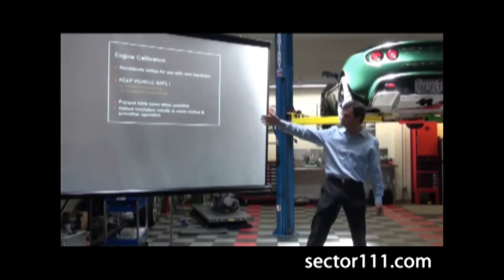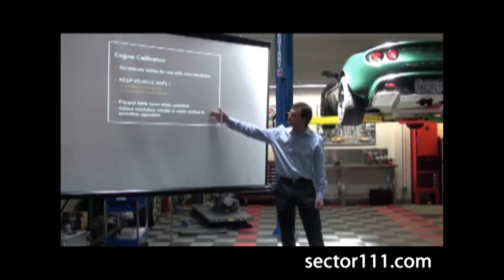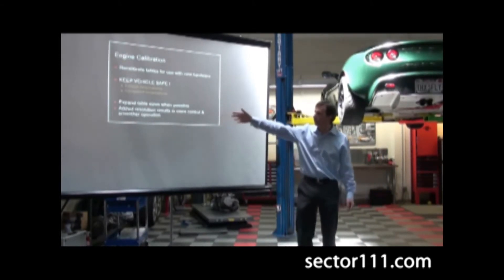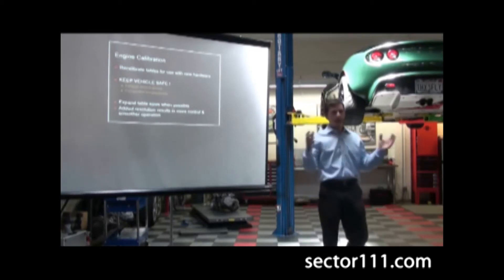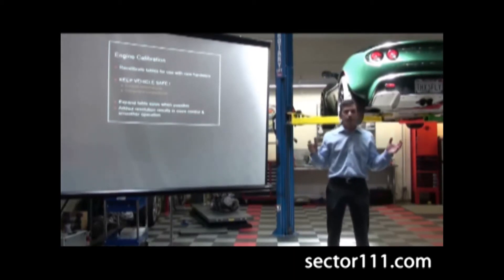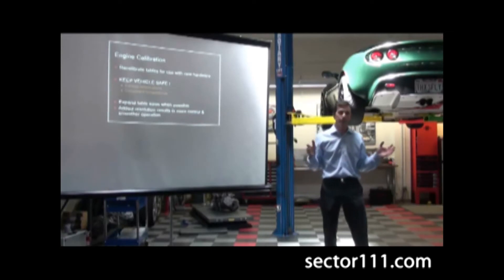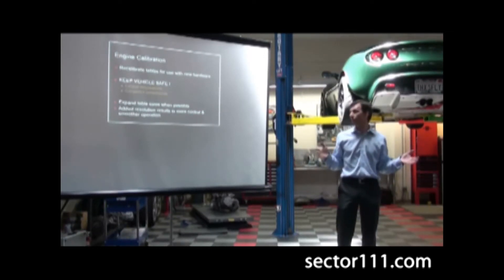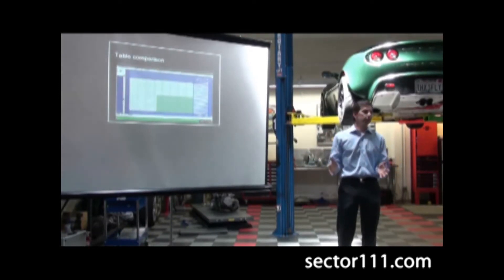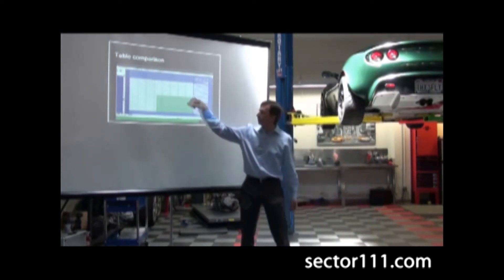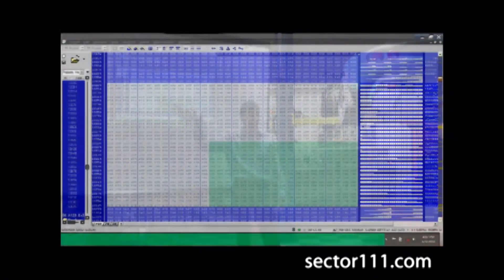A couple things we do with the Lotus, with the ECU reflashes we have for the Lotus are to expand the table sizes. I'll show you in the next slide. As they come from Lotus, things like the ignition timing table, the fuel tables, they're only using this green box, which is reasonable.